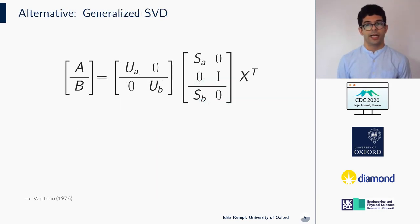The GSVD is a general matrix result and concerned with the simultaneous decomposition of two matrices A and B that have an equal number of columns. The matrices UA and UB are orthogonal, SA and SB are diagonal, and the matrix X is invertible.